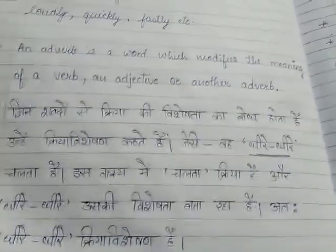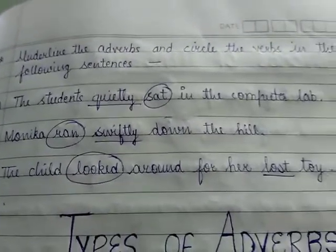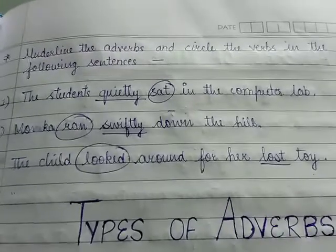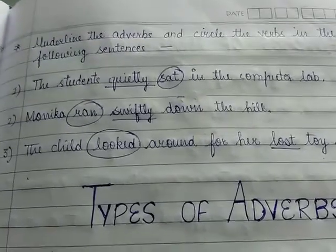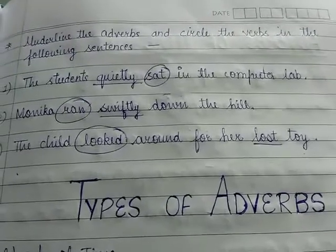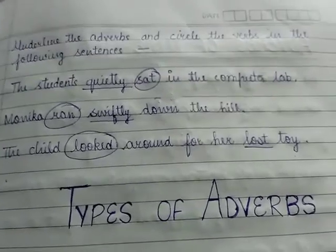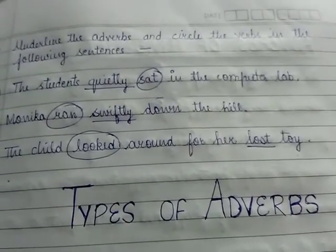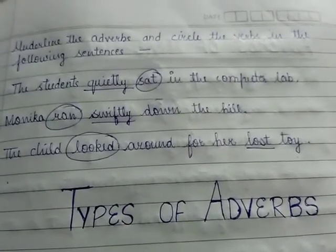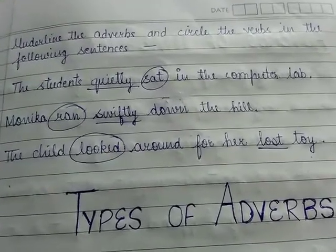Okay, चलिए, let's solve a small exercise so that it will be clear to you what is a verb and what is an adverb. You can also see videos of verb already uploaded on the YouTube channel. Underline the adverbs and circle the verb in the following sentences. Sentences में आपको verbs को circle करना है और adverbs को underline करना है.